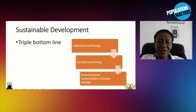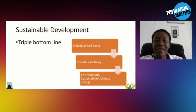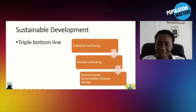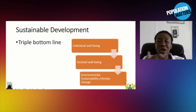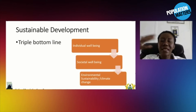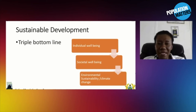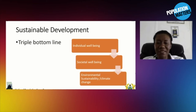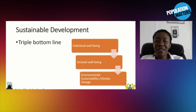Sustainable development, in my mind, has three bottom lines: individual well-being, societal well-being, and environmental sustainability — climate change — all in harmony. How do we get individual well-being within societal well-being and then the whole environment supporting us? That is really where sustainable development is. The triple bottom line is individual, societal, and environment, because society is made up of individuals and the environment that sustains us should also not be compromised.